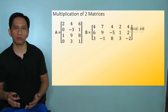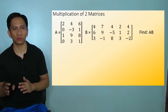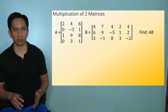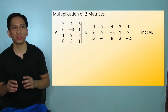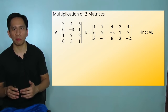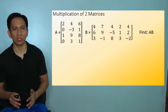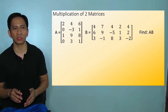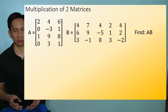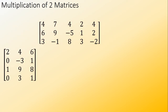Let us now do the more difficult multiplication of two matrices. First, be sure that the number of columns of the first matrix is equal to the number of rows of the second matrix. Then write the matrices as such.